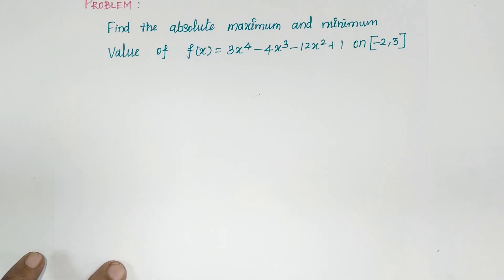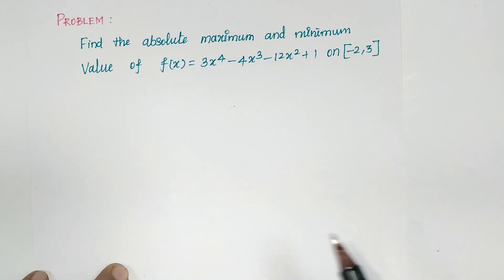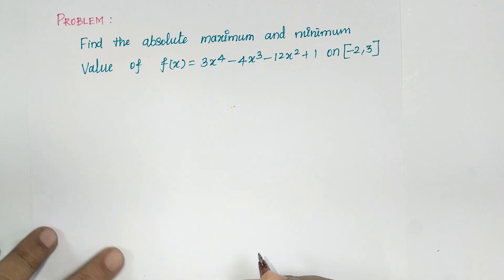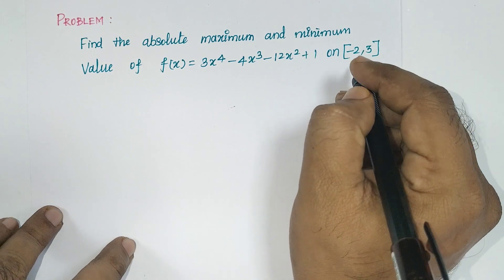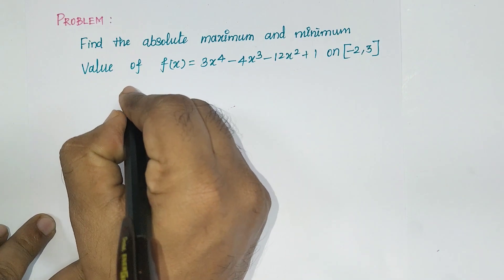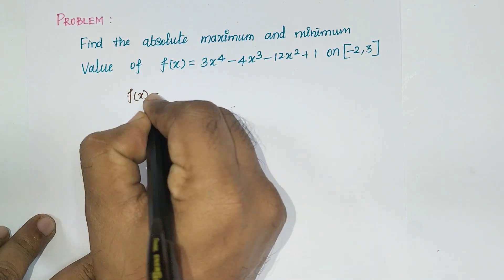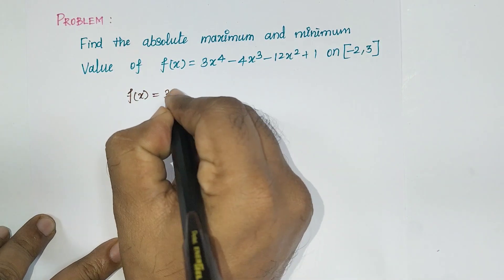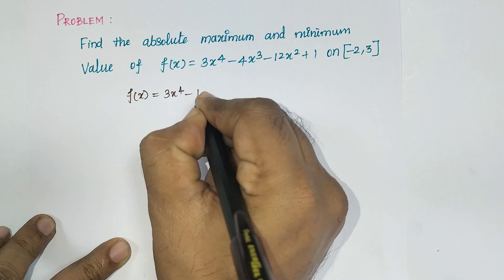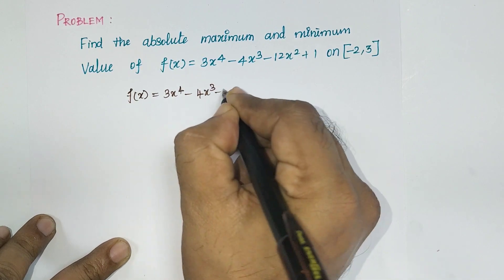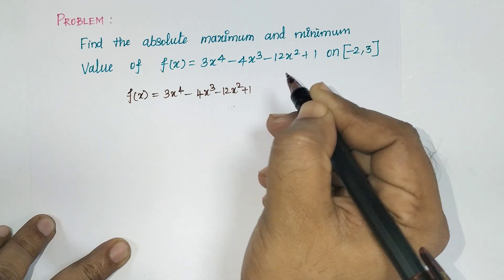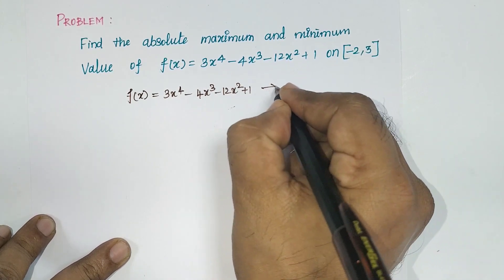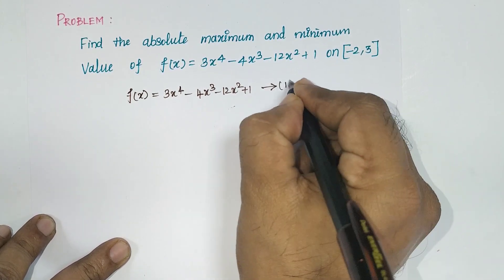Now I will start the problem. Find the absolute maximum and minimum value of f(x) on the interval [-2, 3]. The given function is f(x) = 3x⁴ - 4x³ - 12x² + 1, which is equation number 1.